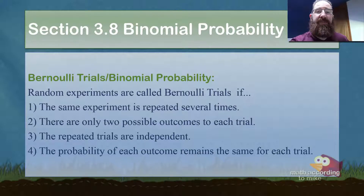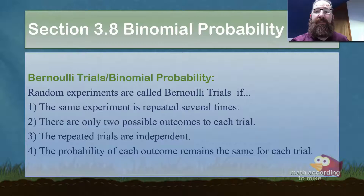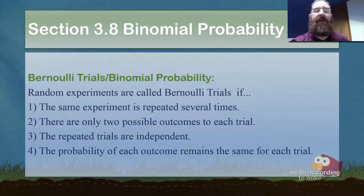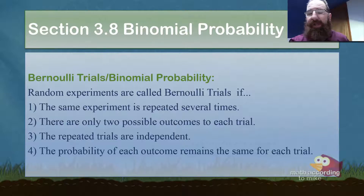These four scenarios are very important to make up a Bernoulli trial. First, the same experiment must be repeated several times. Second, there are only two possible outcomes, and we call those success and failure. Third, the repeated trials are independent, meaning the result of one experiment does not affect another. Fourth, the probability of each outcome remains the same for each trial. All four of those together are required for a Bernoulli trial. If any one of those is missing, you no longer have a Bernoulli trial.